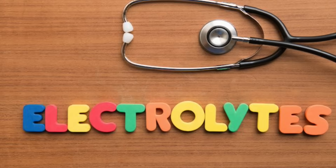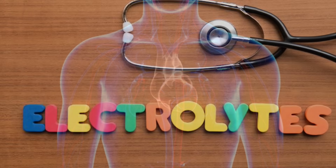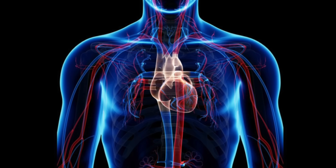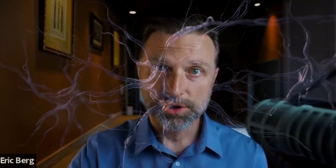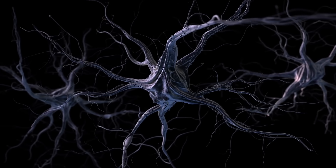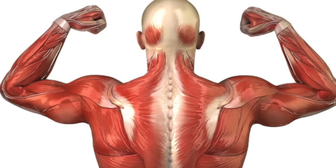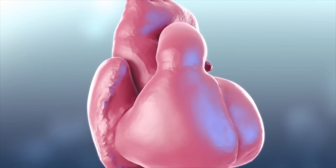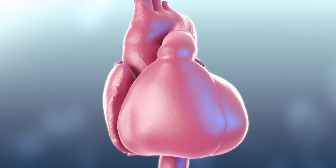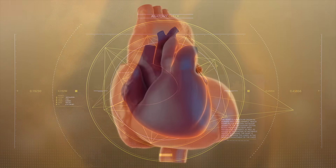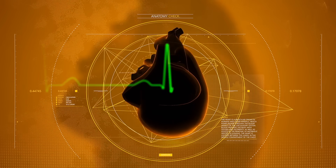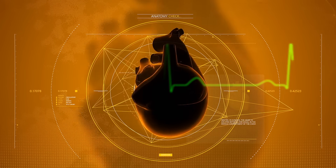What I want to talk about is electrolytes in relationship to the cardiovascular system. We have electrolytes like potassium, magnesium, calcium, and sodium. These electrolytes really control the nerves and the muscles. The heart is a muscle and it has nerves that control it, and it even has a pacemaker that controls the rhythm.